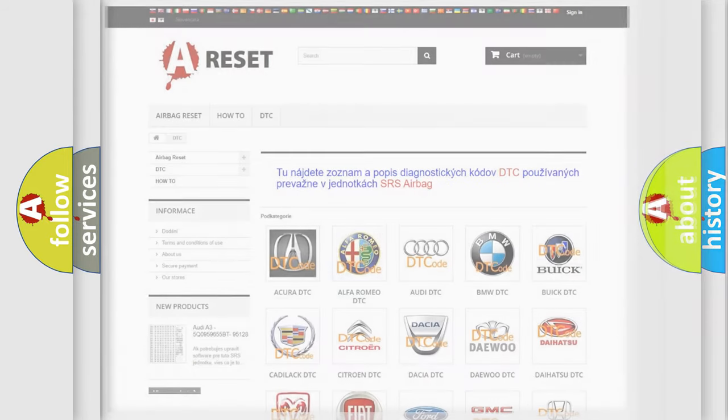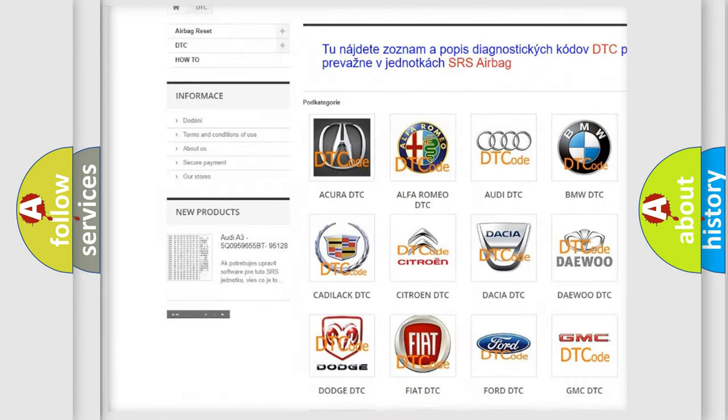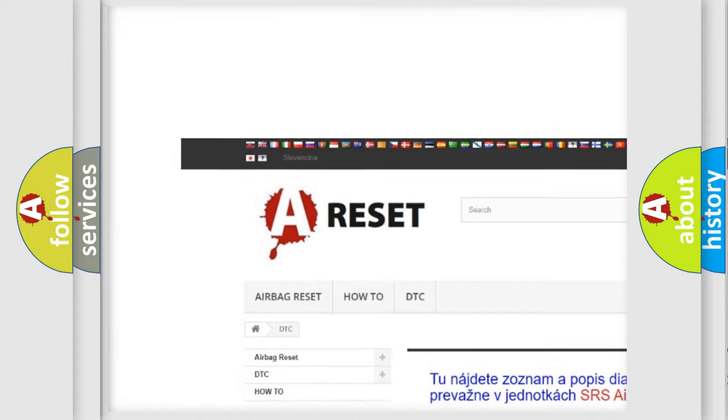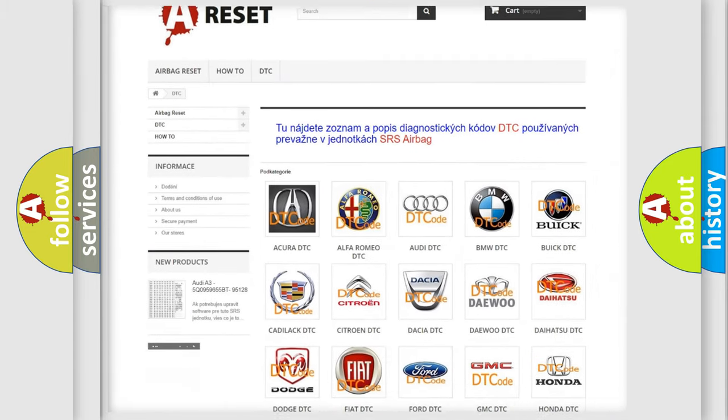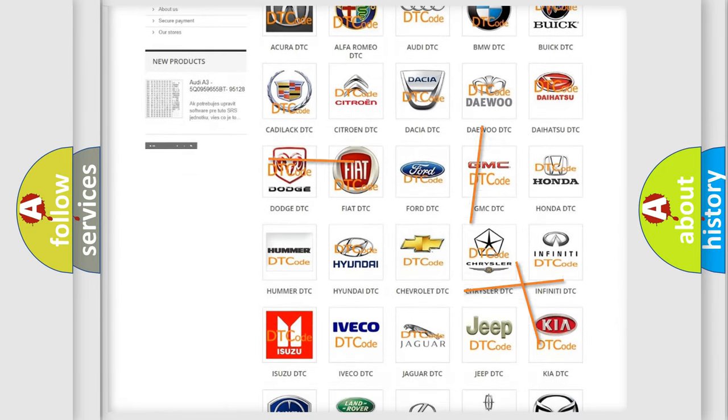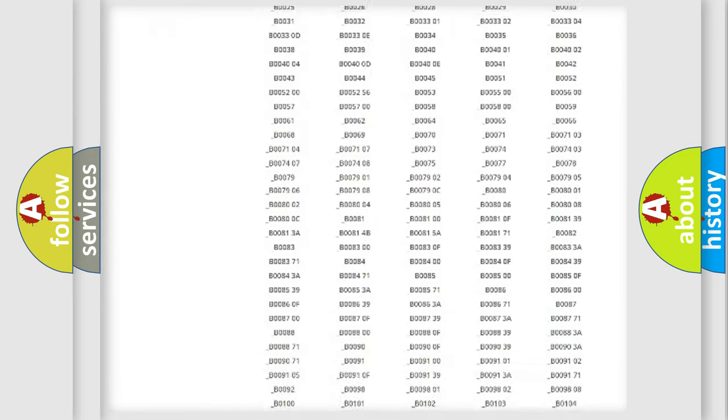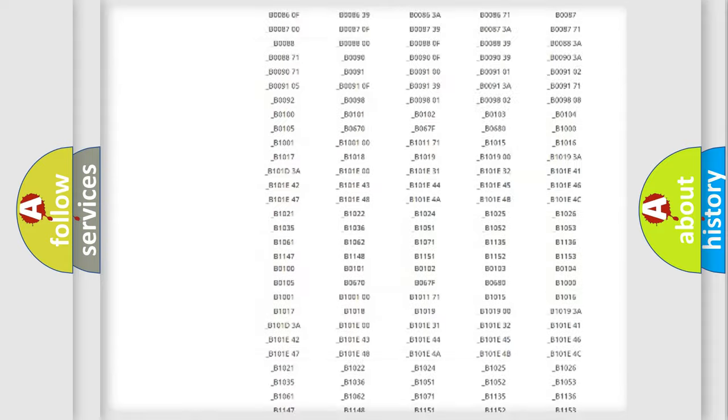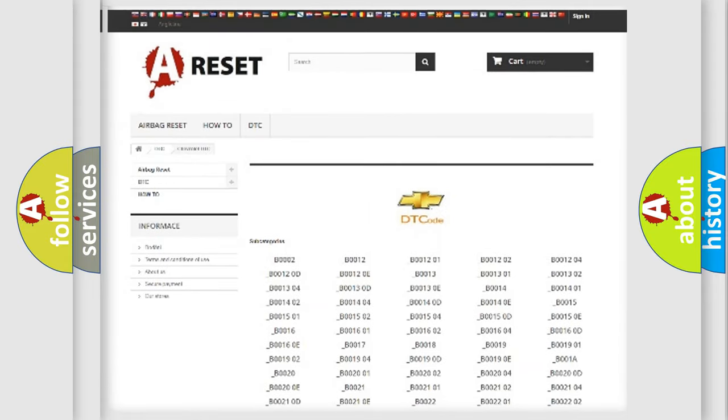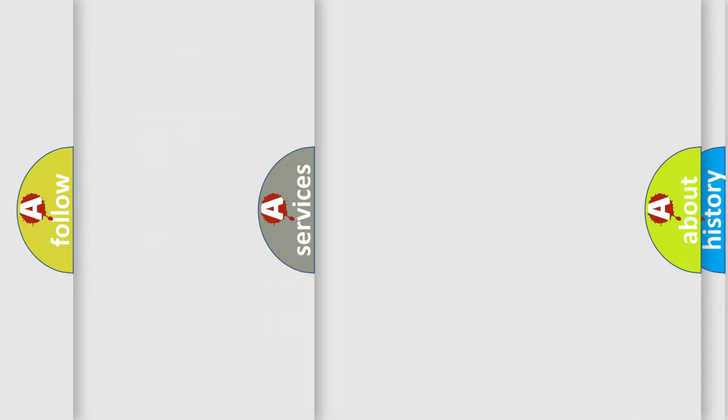Our website airbagreset.sk produces useful videos for you. You do not have to go through the OBD2 protocol anymore to know how to troubleshoot any car breakdown. You will find all the diagnostic codes that can be diagnosed in Chevrolet vehicles and many other useful things.